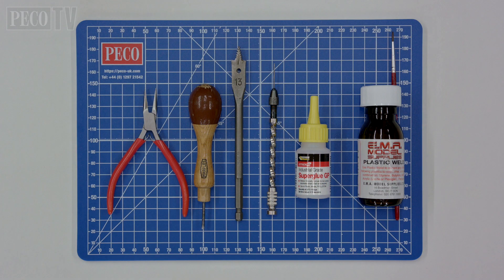You will also require a pair of pointed nose pliers, a bradawl, a 1.3mm drill bit, a pin vise with a 1.4mm drill bit, super glue and plastic weld.